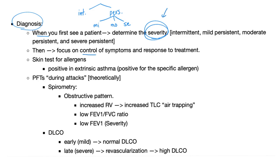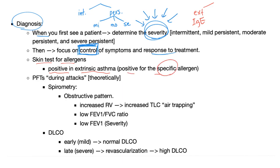Next, focus on control of symptoms and response to treatment. First you diagnose the patient, determine the severity, and start medications. Then you switch medications or increase the dose based on control of symptoms and response to treatment. You can do skin tests for allergens — it's positive in extrinsic asthma because that's the one related to allergy. Intrinsic asthma has nothing to do with allergy, and this helps narrow down which allergen triggered the asthma.